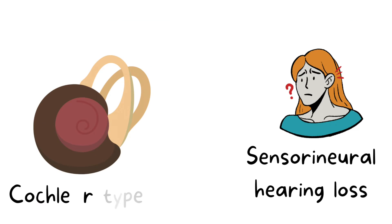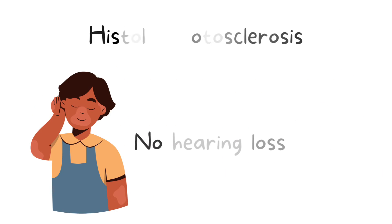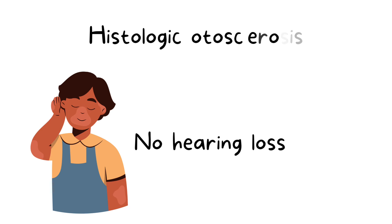The cochlear type of otosclerosis occurs around the round window, usually causing sensorineural hearing loss, and it is not as common as stapedial otosclerosis. The histological type is one where the patients are asymptomatic and do not have hearing loss; however, it is found only on histopathological examination.